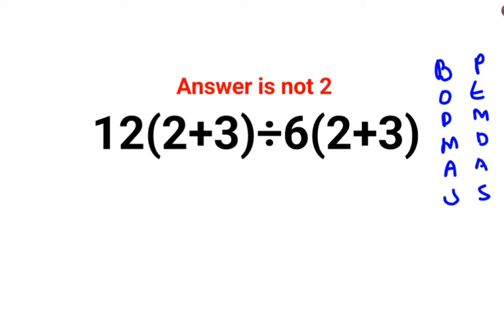So according to BODMAS or PEMDAS, we can say the first thing we do is the brackets or parenthesis. So we will be doing what? 12. There is no sign between the number and the brackets, so it is basically multiplication.